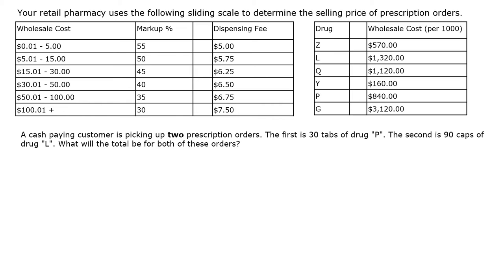Let's start with drug P. From the table, drug P costs $840 per 1,000 units, and we need to dispense 30 tablets. We need to figure out the wholesale cost for 30 tablets. I'm a big fan of being consistent using proportions and cross multiplication. The method I teach is to always set up a proportion with your unknown variable in the numerator on the right-hand side. So we're solving for X, which equals cost per 30 tablets.